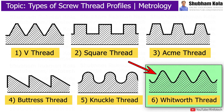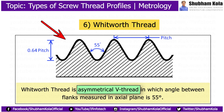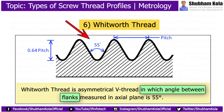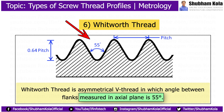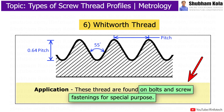Whitworth thread is a symmetrical thread in which the angle between flanks measured in the axial plane is 55 degrees. These threads are found on bolts and screw fastenings for special purposes.